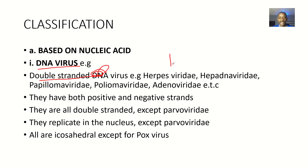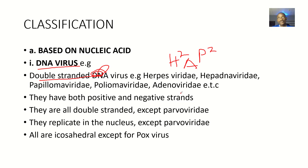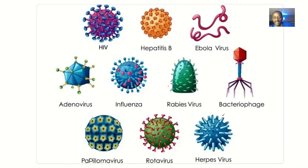The mnemonic for this is H² P² A — H-squared, P-squared, A in the middle. So because they have two strands, one of the strands is positive and one is negative. They are all double-stranded except Parvoviridae, which is an exception.